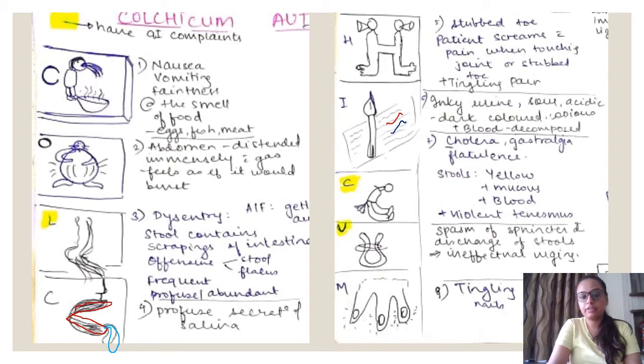Then we have another C. This is a guy passing flatus in the third C. So you have to remember that this C also stands for cholera or gastralgia and flatulence. The stools are yellow, mucus, has blood in it and there is violent tenesmus.